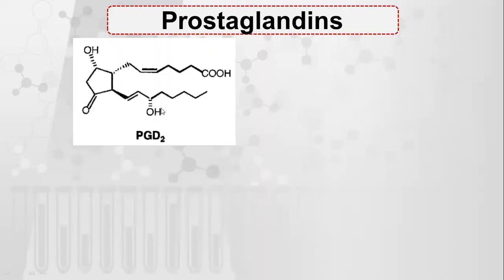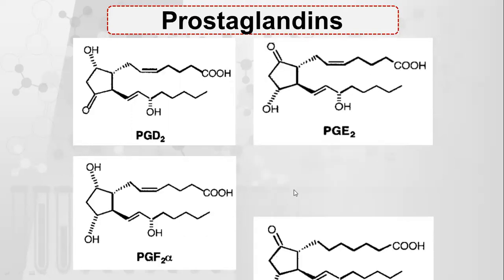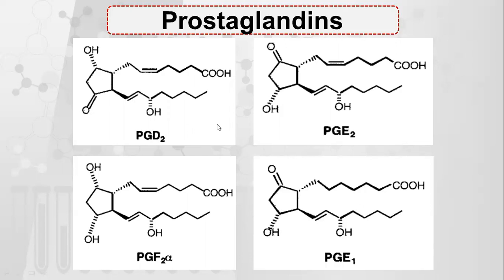These are the structures of different prostaglandins. One thing common to all prostaglandins is that they all contain 20 carbon atoms, the same as in arachidonic acid. In addition, all prostaglandins contain a 5-membered ring, while the arrangement of other groups varies. So every prostaglandin will have a 5-membered ring and 20 carbons.